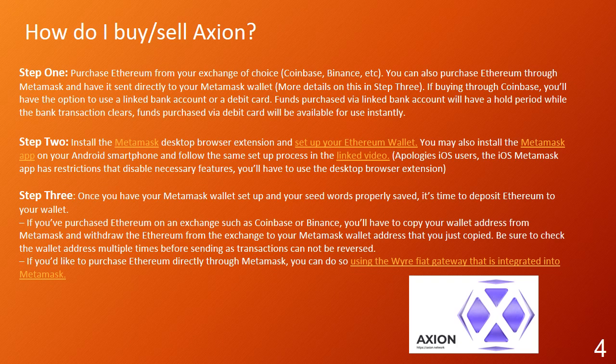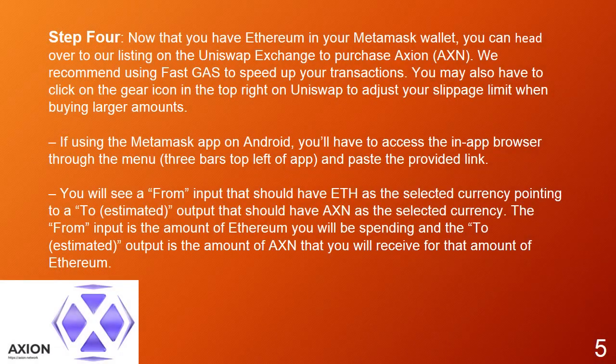If you've purchased Ethereum on an exchange such as Coinbase or Binance, you'll have to copy your wallet address from Metamask and withdraw the Ethereum from the exchange to your Metamask wallet address. Be sure to check the wallet address multiple times before sending, as transactions cannot be reversed. If you'd like to purchase Ethereum directly through Metamask, you can do so using their wire/fiat gateway integrated into Metamask. Step 4: Now that you have Ethereum in your Metamask wallet, you can head over to our listing on the Uniswap exchange to purchase Axion. We recommend using FastGas to speed up your transactions. You may also have to click the gear icon in the top right on Uniswap to adjust your slippage limit when buying larger amounts.